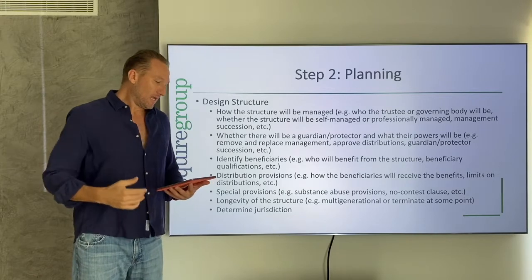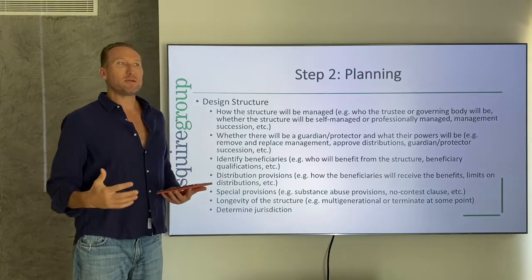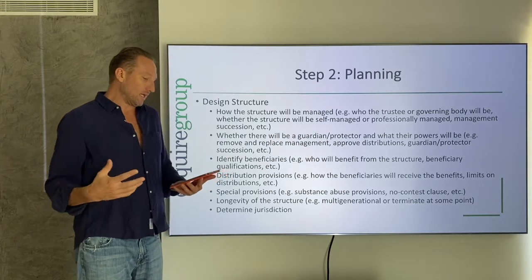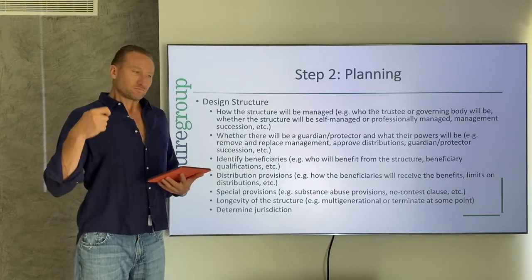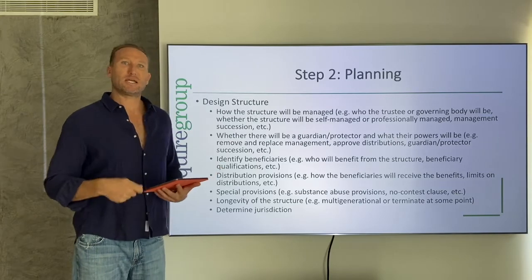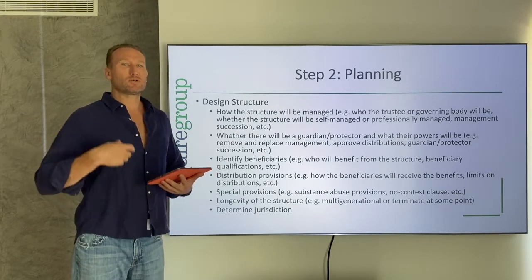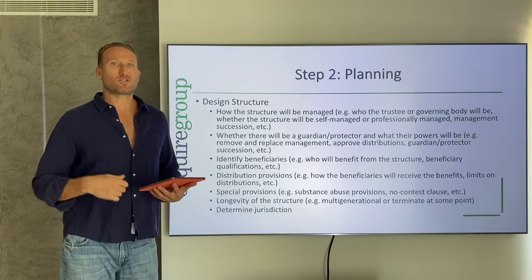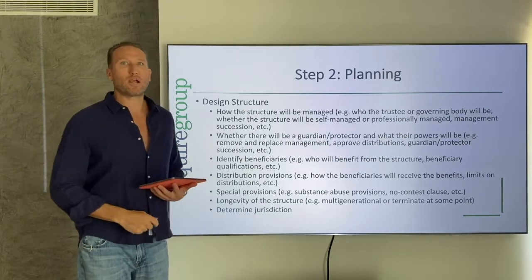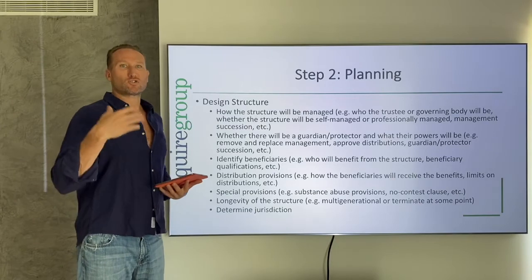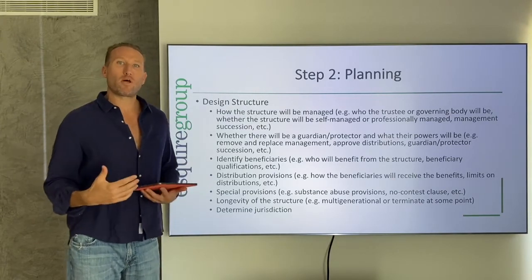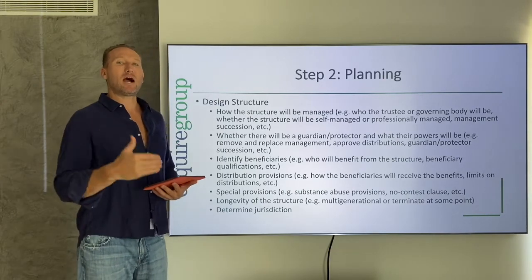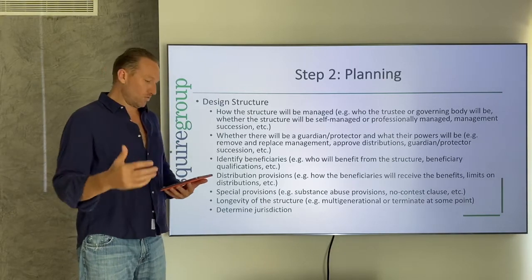We need to look at whether there is going to be a guardian or protector and what their powers are going to be. Typically they have the right to remove or replace a trustee, approve distributions, approve financial transactions over a certain amount, or their approval is required to amend the foundation or trust or re-domicile it. We need to work through what all those powers are going to be, as well as what the succession is going to be of the guardian or protector.